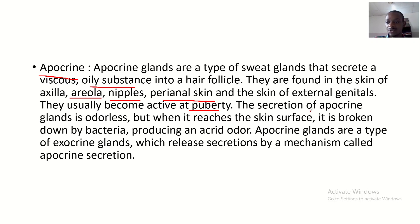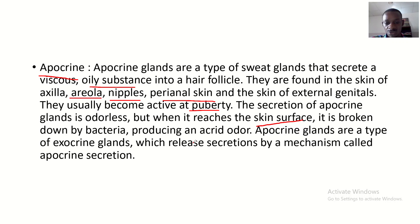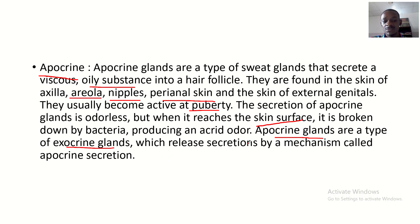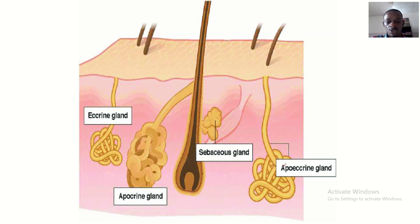The secretion of apocrine glands is odorless, but when it reaches the skin surface it is broken down by bacteria, therefore producing an acrid odor. Apocrine glands are a type of exocrine gland which release secretions by a mechanism called apocrine secretion.